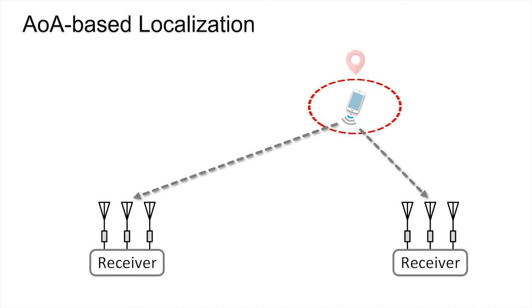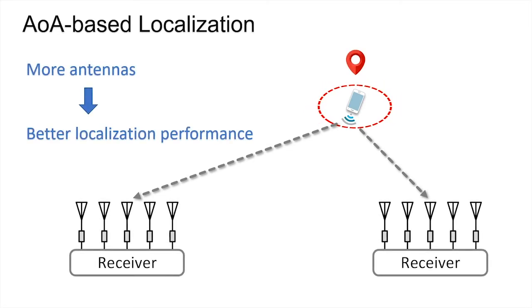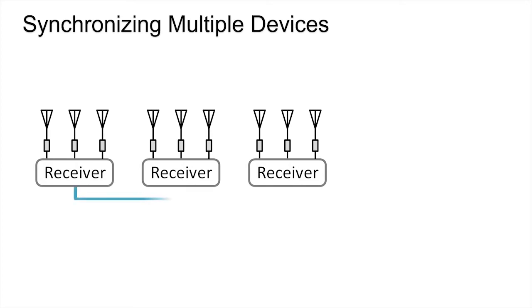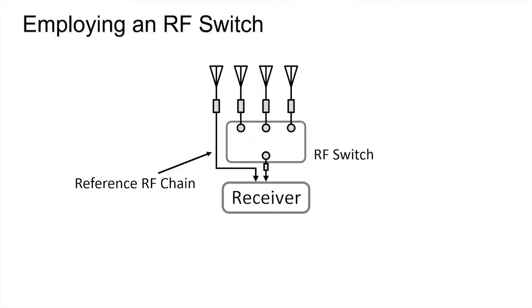For localization based on angle of arrival estimation, more antennas can greatly improve the performance of localization. If we synchronize multiple devices to connect more antennas, the price of the system will increase several fold. A promising and low-cost approach is employing an RF switch.